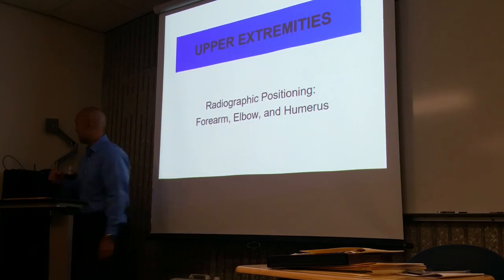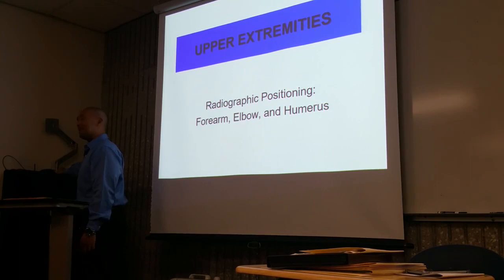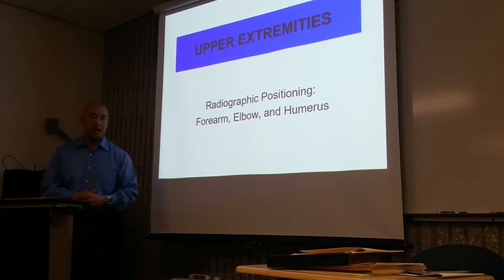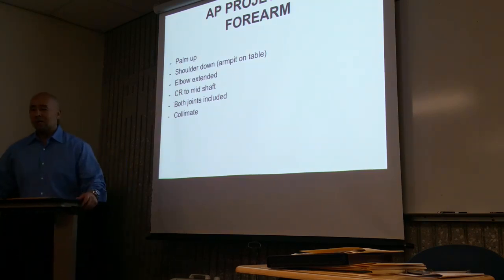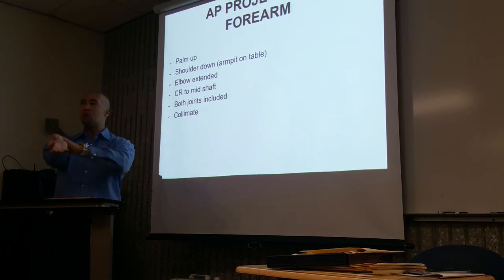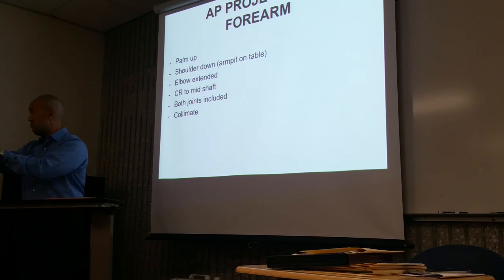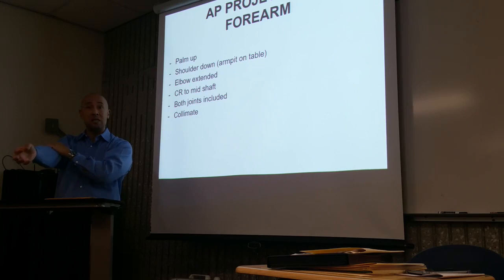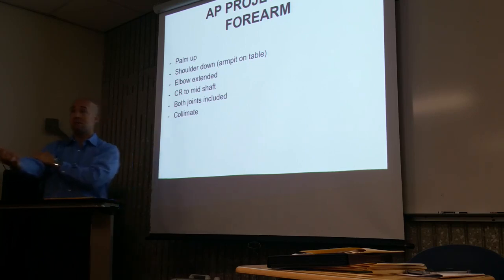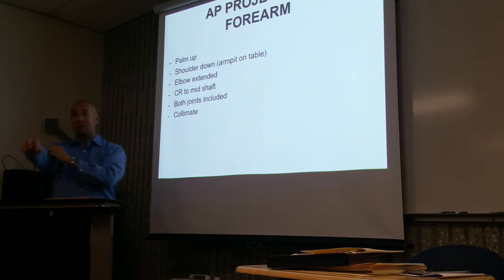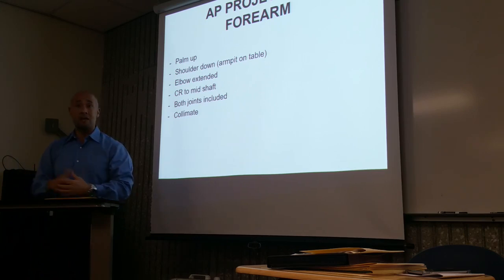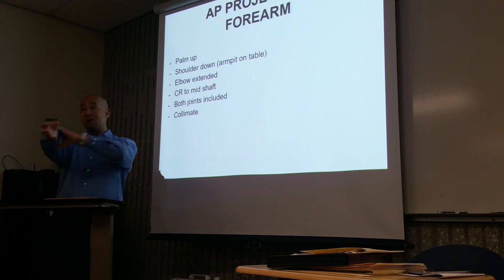Now let's talk about positioning. For the AP projection of the forearm, when prepping the patient, we need to get rid of all artifacts. Remove jewelry, and if they're wearing long sleeves or a jacket, have them change into a gown. With digital radiography, x-rays can pick up on clothing including folds — folds and creases may be mistakenly read as a hairline fracture or anomaly. So try to clear everything from the wrist to the elbow.